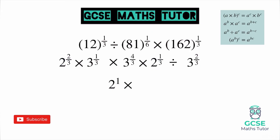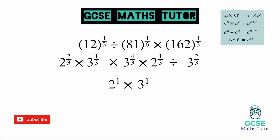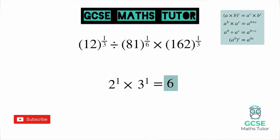Now looking at the powers with base number 3, we need to account for multiplication and division. The first two powers of 3 are a third and 4 thirds, which add to 5 thirds. We then subtract the power of 2 thirds because we are dividing, giving us 5 thirds minus 2 thirds, which equals 3 thirds — a power of 1. So all of those simplify to 3 to the power of 1. Since 2 to the power of 1 is 2 and 3 to the power of 1 is 3, all we have to do is 2 times 3, giving a final answer of 6. All we had to do was break each number down, and we ended up with a really nice simple answer.